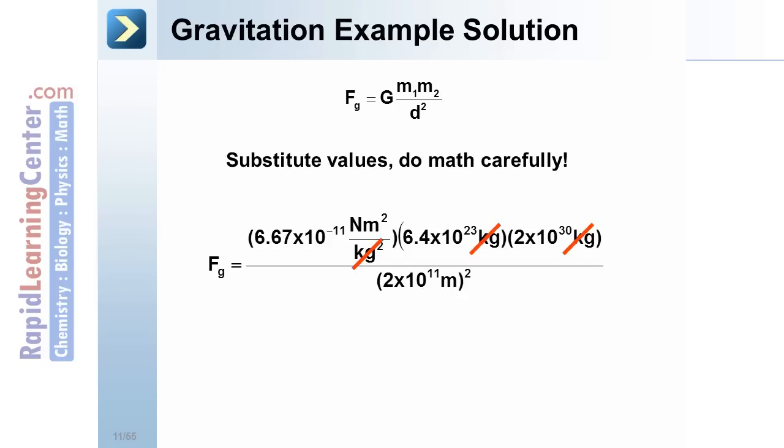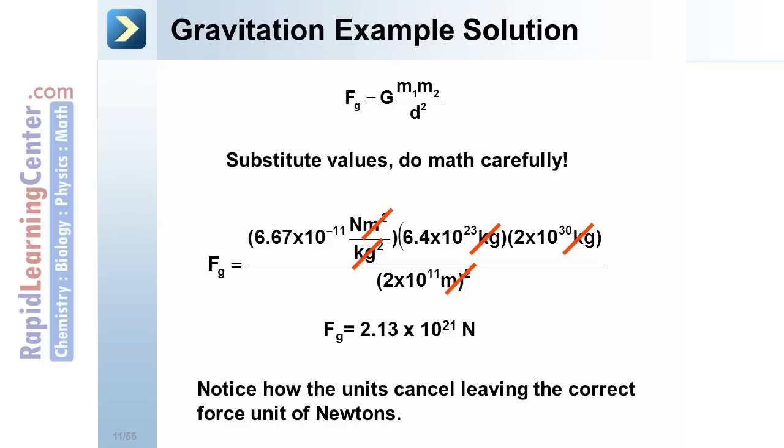Note how the units of kilograms cancel out. Note how the meter squared units cancel out. When we calculate carefully, we arrive at a numerical answer of 2.13 times 10 to the 21st. The only remaining label is Newtons. This should make sense, since this is our typical unit for force.